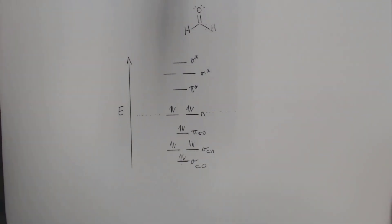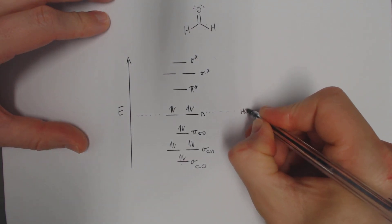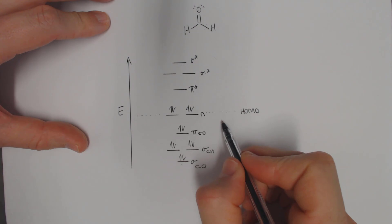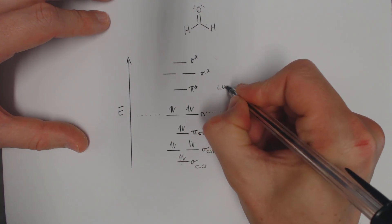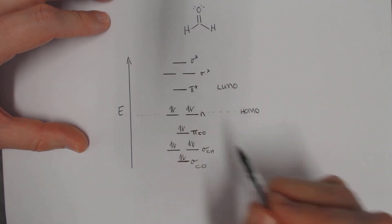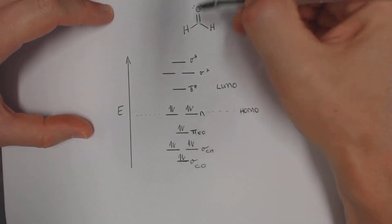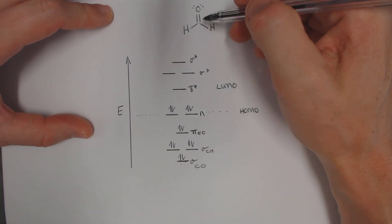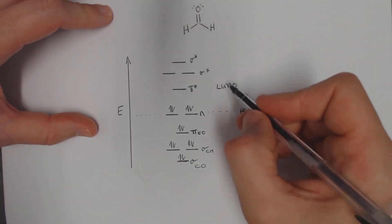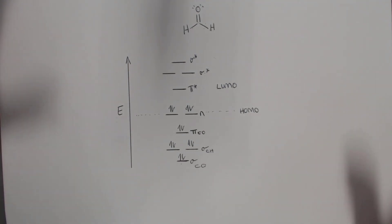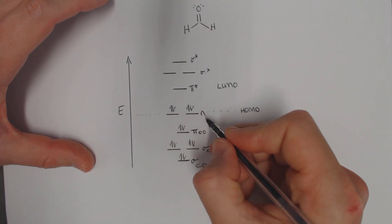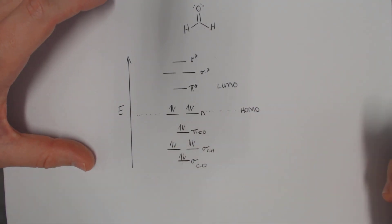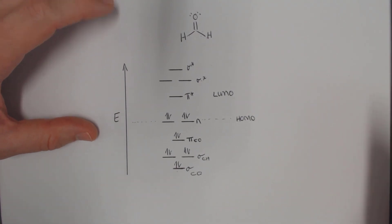Looking at this diagram, we ask: what is the highest occupied molecular orbital? It is the lone pair. And what is the lowest unoccupied molecular orbital — the LUMO? It's the pi star antibonding orbital. When we do reactions of carbon-oxygen compounds, coming up shortly in this lecture series, we'll see reactions occurring at this LUMO. But I want to briefly show you why it's important to realize that the lone pairs are the HOMO.